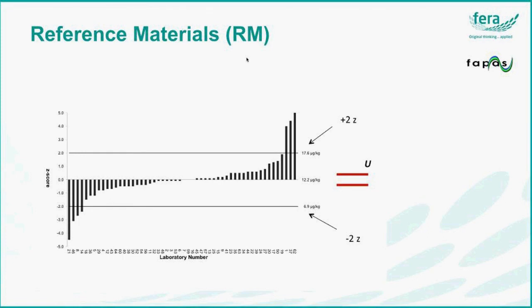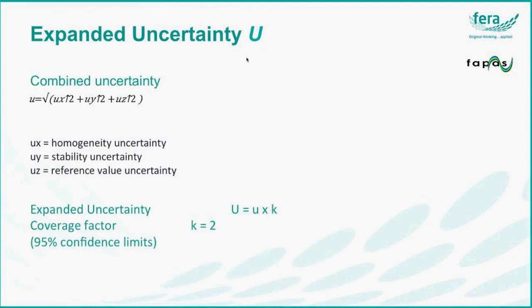Where does the uncertainty derive from? We provide an expanded uncertainty, which is the sum of a number of different sources of uncertainty. The components combine the uncertainty of homogeneity, the uncertainty of stability, and the uncertainty of the reference value. This is a considerable piece of statistical work. It's an expanded uncertainty, which means that we provide a coverage factor based on 95% confidence limits.